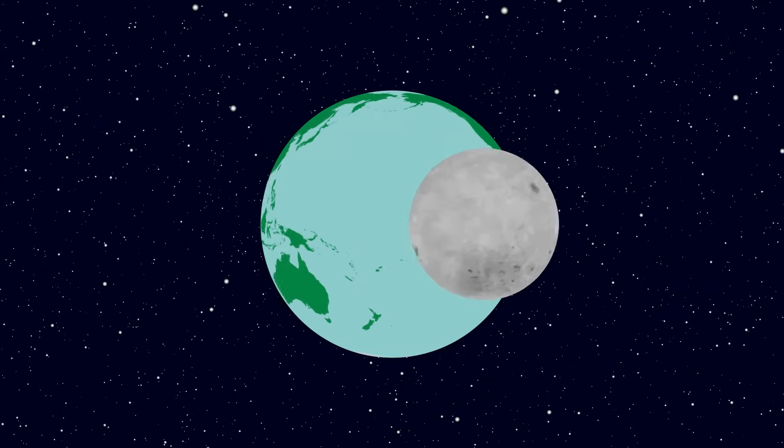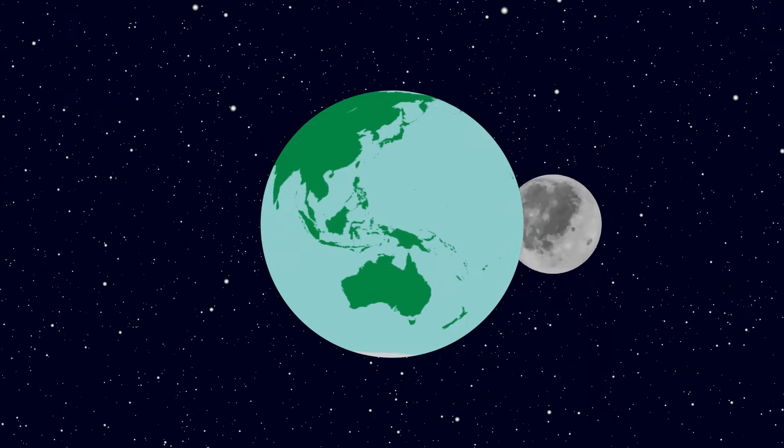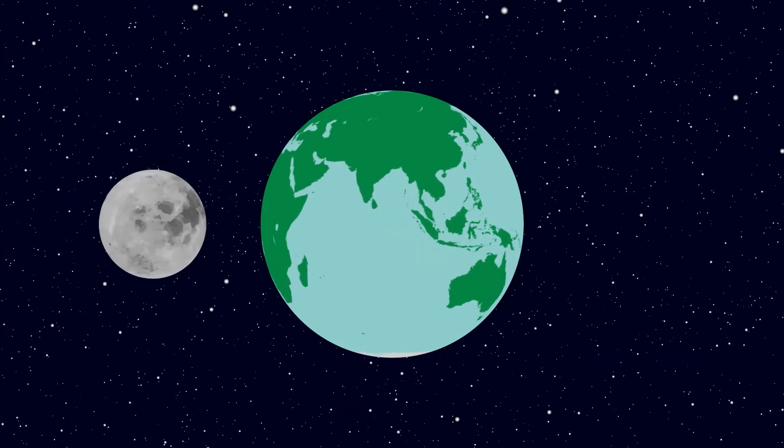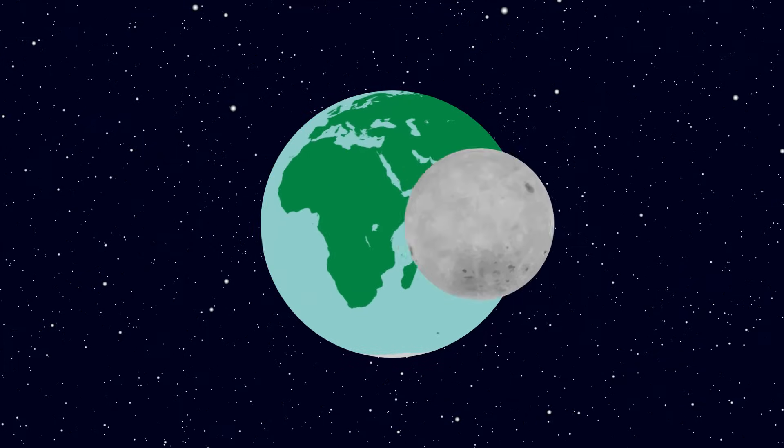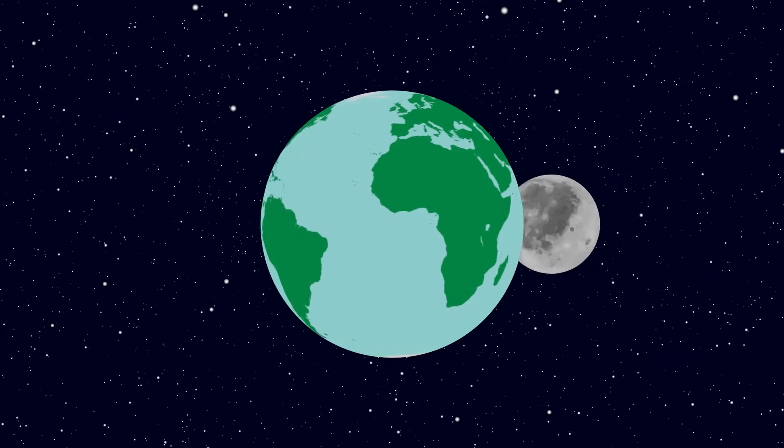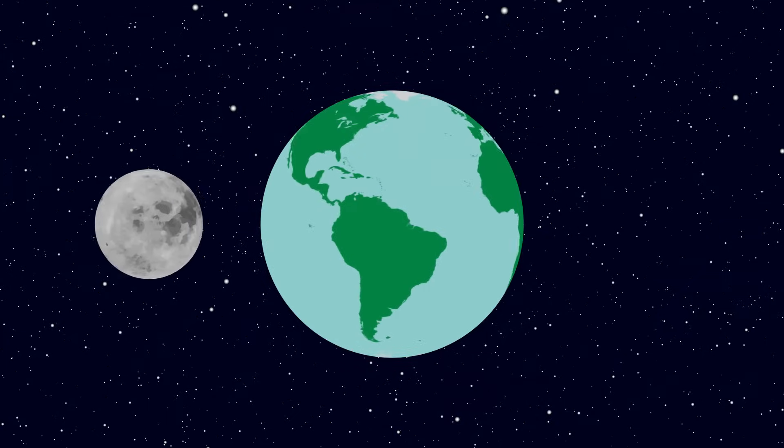Firstly, the same face of the moon always faces the Earth, so when we look up at the moon, we're always seeing the same side. Before humans first went to the moon, no one even knew what the other side looked like.